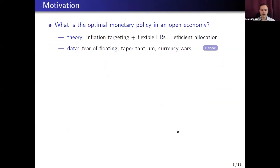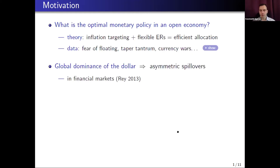Besides that, policymakers often voice concerns about potential negative spillovers from US policy. There was much discussion about rising risk premium in other countries after the taper tantrum, and many concerns about aggregate demand spillovers due to currency wars. One way to connect theory and practice is based on the global dominance of the dollar in financial markets, as famously pointed out by Hélène Rey — this can lead to the global financial cycle where many countries try to keep exchange rates stable relative to the dollar, creating asymmetric spillovers similar to what we see in the data.